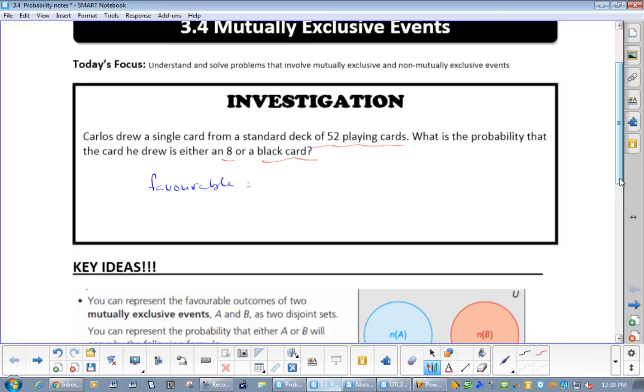This is how we would say it in math language: the number of 8s plus the number of blacks minus the number of 8 and black. Because we counted the 8 blacks twice. We counted the black 8s when we picked the 8s, and black 8s when we picked the blacks. So we did it twice, so we're gonna bring it out. So how many 8s are there? How many black cards? How many 8 and blacks? So minus 2.